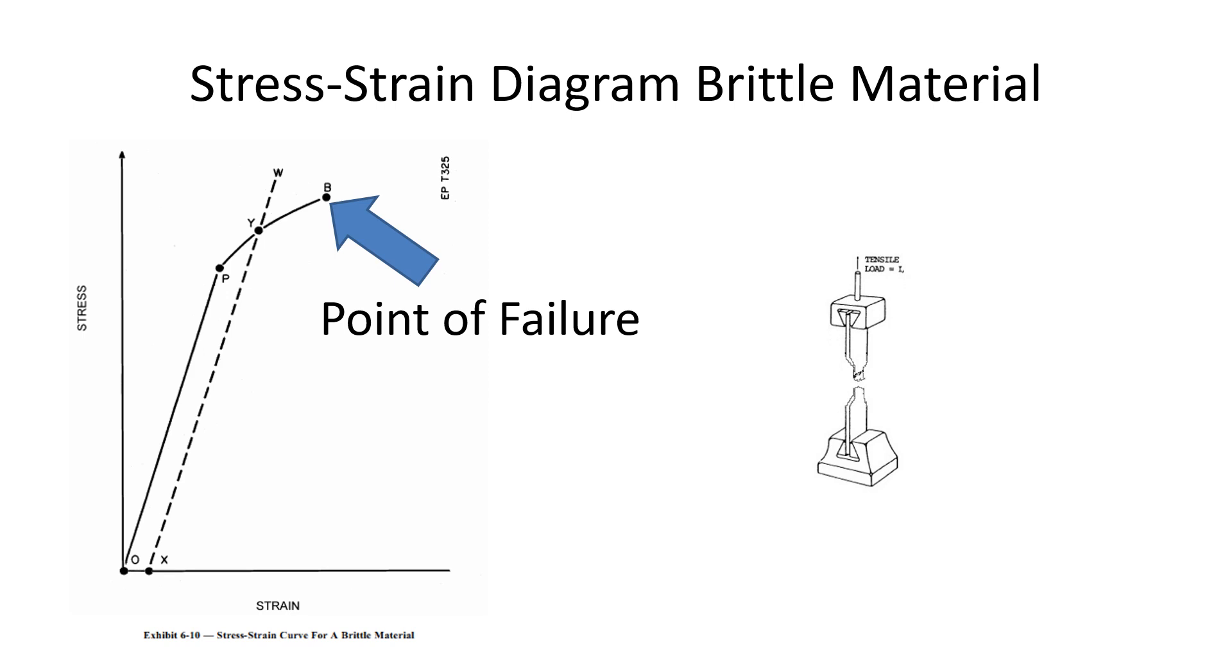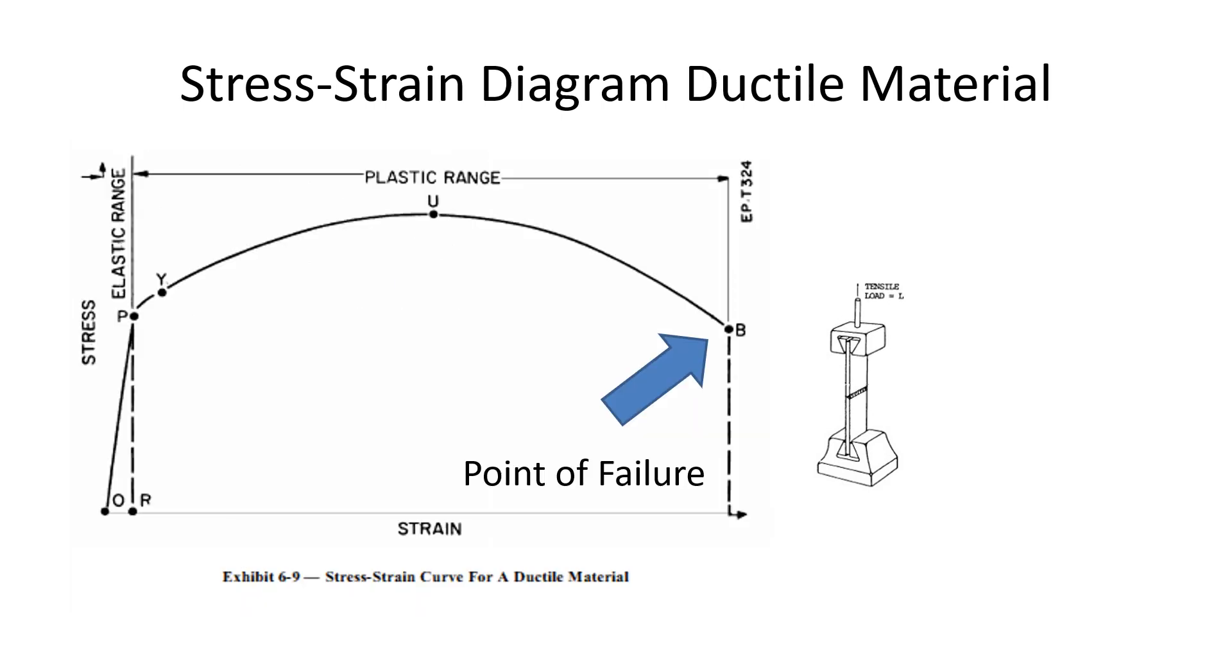So our stress strain diagram. You can see on the right we've got the little gif file and our tensile sample being pulled apart. When it finally breaks, that would be our point of failure, for a brittle material. For a ductile material, there's a lot more stretching going on before the material finally fails. You can see there's a difference in the stress strain curves for a ductile versus brittle material.